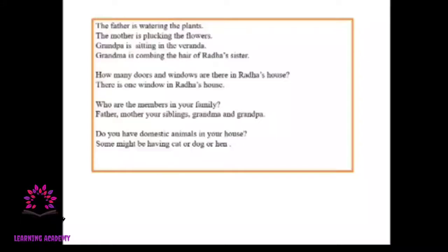Father, mother, grandpa, grandma, brother, sister, and one pet dog. What is father doing? He is watering the plants. What is mother doing? The mother is plucking the flowers. What was grandpa doing? Grandpa was sitting in the veranda. And grandma — she is combing the hair of Rada's sister.